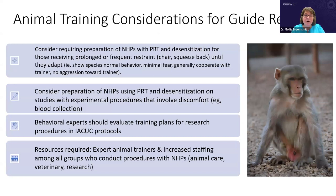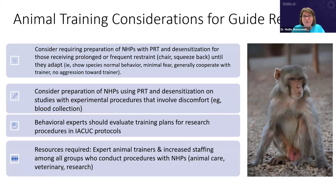I would suggest considering requiring preparation of non-human primates with PRT and desensitization for those on studies involving prolonged or frequent restraint, with this training continuing until they have adapted. I would also suggest preparing non-human primates using PRT and desensitization for studies with experimental procedures that will involve some discomfort. Behavioral experts should be evaluating training plans for research procedures in the IACUC review process. There is tremendous potential here to improve animal welfare through these methods, though it will require additional human resources — expert animal trainers and increased staffing among all groups who conduct procedures with non-human primates.